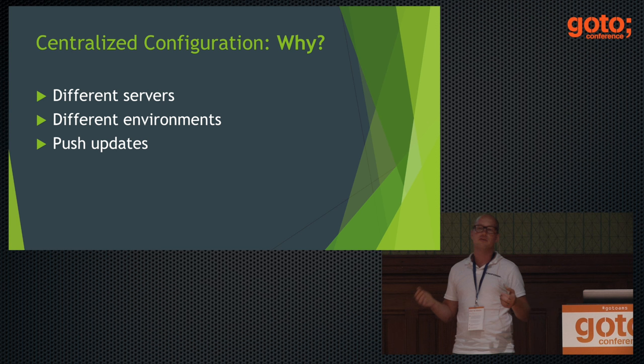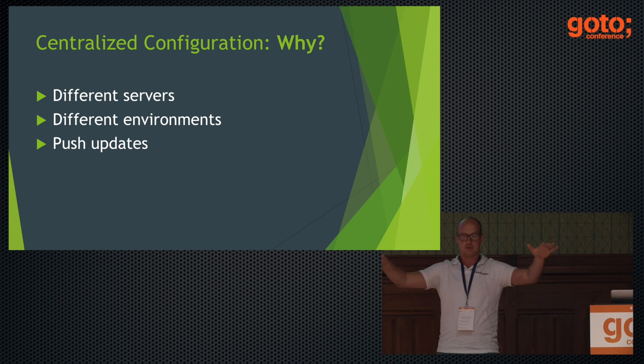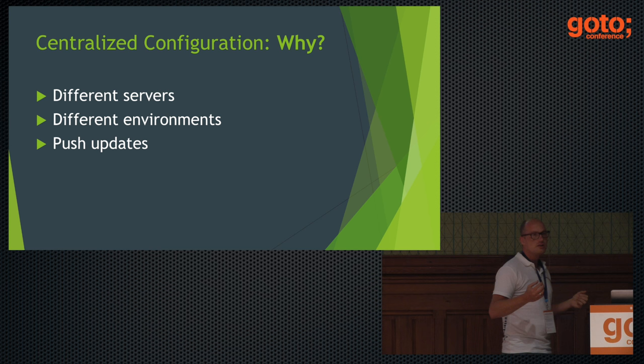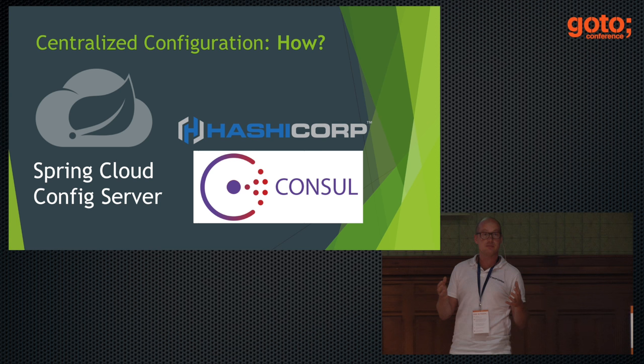Finally, if your configuration does change, typically with a properties file in Spring you're forced to restart the whole application. That would mean even with central configuration you'd still need to know which applications rely on a changed key, find those instances, and manually restart them. It would be nice to be able to push out configuration updates back to the services automatically.